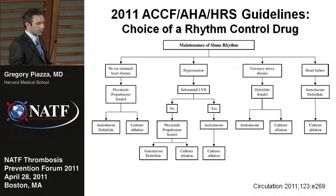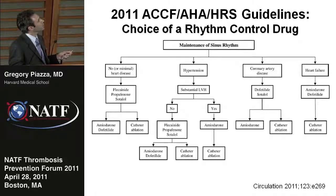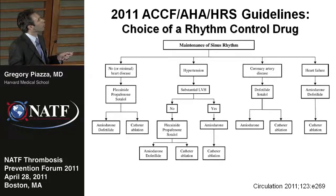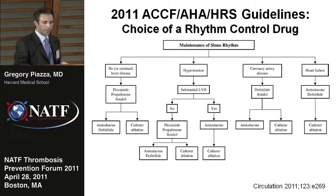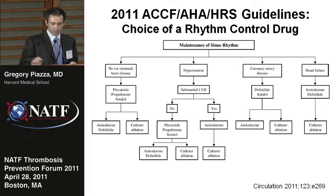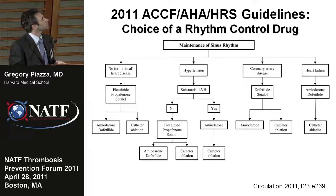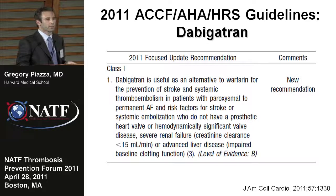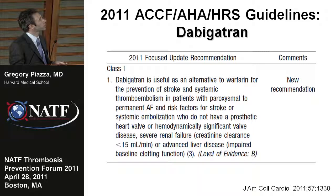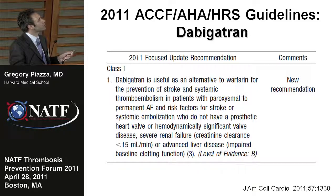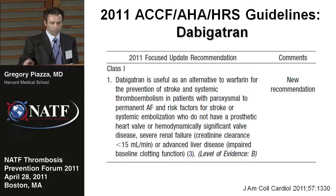2011 newly released guidelines for management of atrial fibrillation encouraged clinicians to take into account comorbid cardiovascular conditions when considering a rhythm control agent. Conditions like hypertension, coronary disease, and heart failure should all be considered when picking the right rhythm control agent. Dabigatran has been newly added to the recommendations as a class 1 agent for stroke prevention in atrial fibrillation.